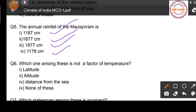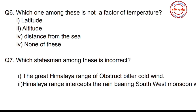The correct option is option number one: 1187 centimeters is the annual rainfall of Mawsynram. Now question number six: which one among these is NOT a factor of temperature?